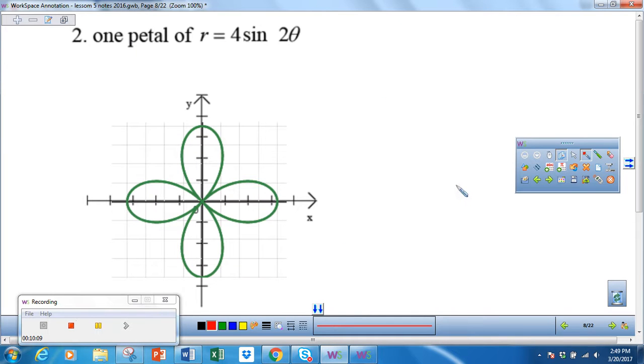For this one, we're finding one petal of r equals 4 sine 2θ. Once again, because it's sine, it's symmetrical to the y-axis. Because it's 2θ, n is even, so I have twice the number of petals—I have four petals. But I just want one petal. So these are my radial lines sweeping these lines. I need to find out what that is. Once again, I'm going to set this function equal to zero.